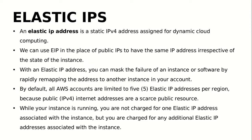To overcome this problem, we have the Elastic IP, which will help you to maintain a static IPv4 address that can be assigned for dynamic cloud computing. No matter what happens to your instance, whether you stop or start the server, it will maintain the same IP address. You can use this Elastic IP address in place of the public IP assigned by AWS to have the same IP address irrespective of the state of the instance — whether it is stopped or running.